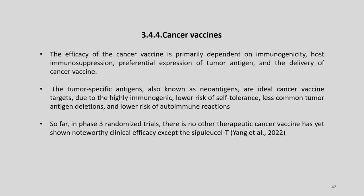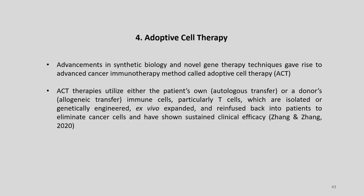The efficacy of the cancer vaccine is primarily dependent on immunogenicity, host immunosuppression, preferential expression of tumor antigens, and delivery of cancer vaccine. Tumor-specific antigens, also known as neoantigens, are ideal cancer vaccine targets due to their high immunogenicity, lower risk of self-tolerance, less common tumor antigen deletions, and lower risk of autoimmune reactions. So far in phase 3 randomized trials, no other therapeutic cancer vaccine has shown noteworthy clinical efficacy except Sipuleucel-T, as reported by Young in 2022.